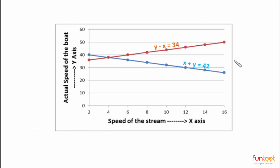After forming the equations for both cases, here is the graph. Along the X axis we have the speed of the stream, and along the Y axis we have the actual speed of the boat. The brown line represents the equation Y minus X equals 34, which is the equation for effective speed upstream. The blue line represents the equation Y plus X equals 42, which is the equation for effective speed downstream.